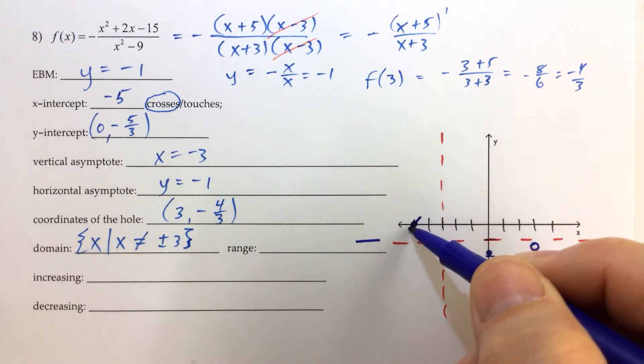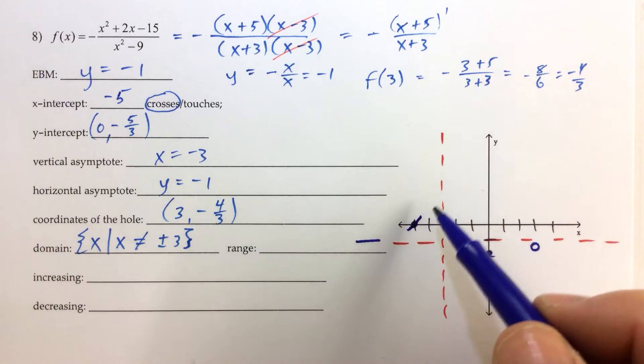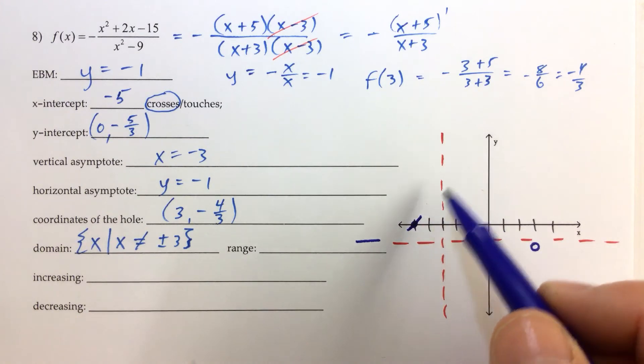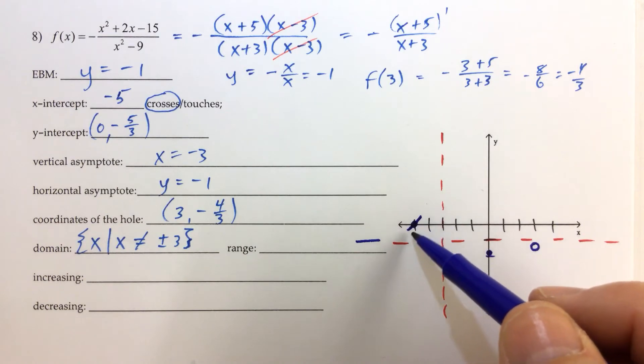It has to go through that point on the x-axis because the multiplicity of the factor x plus 5 is a 1, therefore we're going to cross the x-axis right there at negative 5.